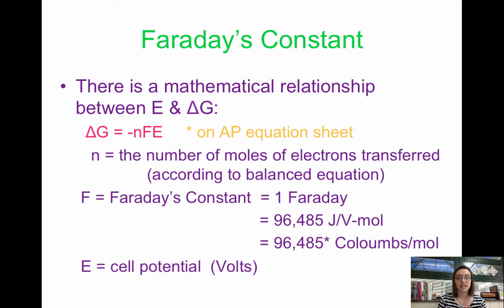That is the number of electrons that you cross out. So if you have five electrons on each side, that means you had five moles of electrons transferred. If you had to multiply to get both of them to equal ten, then ten electrons transferred.